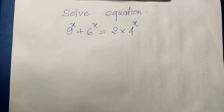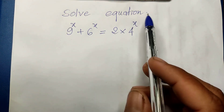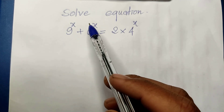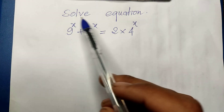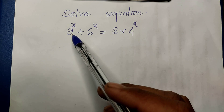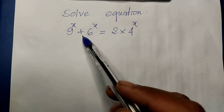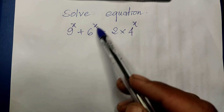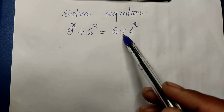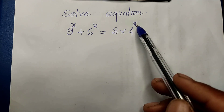Hello everyone. Welcome to my YouTube channel. Today I have one exercise that shows the equation 9^h + 6^h = 2 × 4^h.